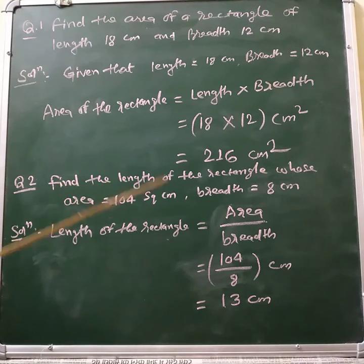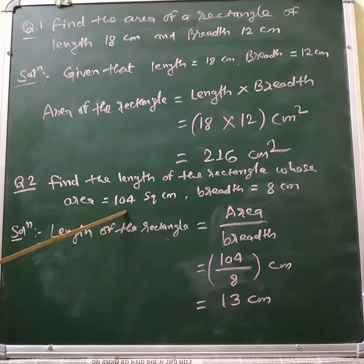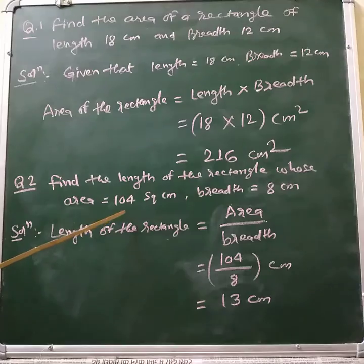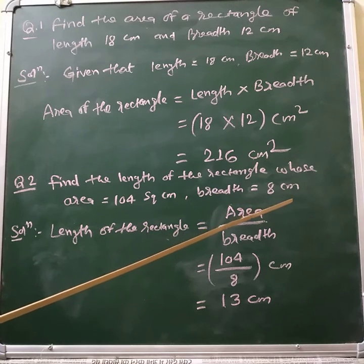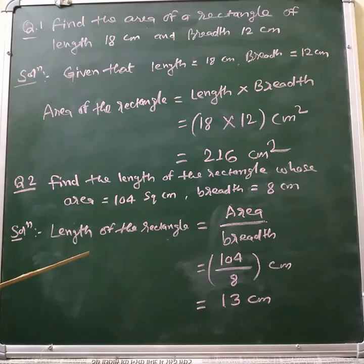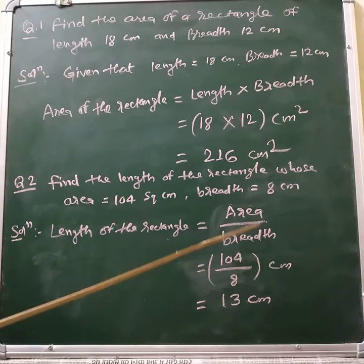Find the length of the rectangle whose area is equal to 104 square centimeter and breadth is equal to 8 centimeter. We know that to find out length of the rectangle, length is equal to area divided by breadth.